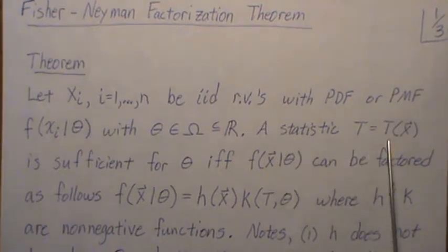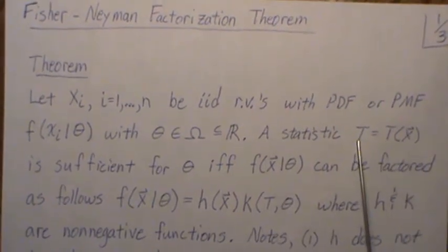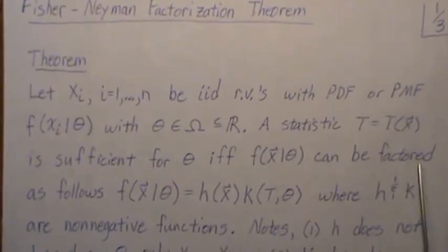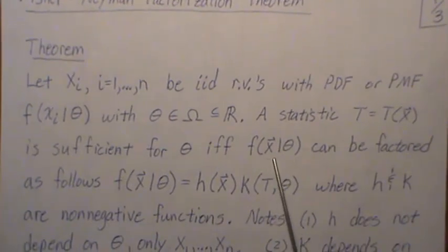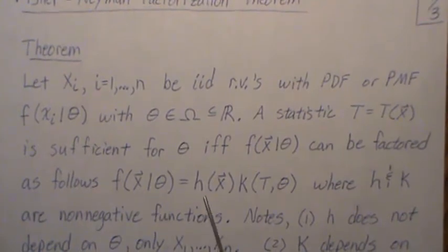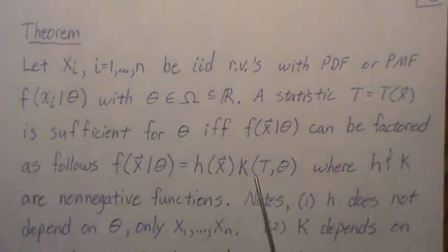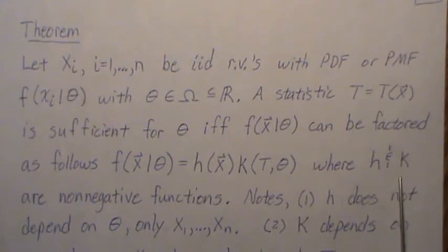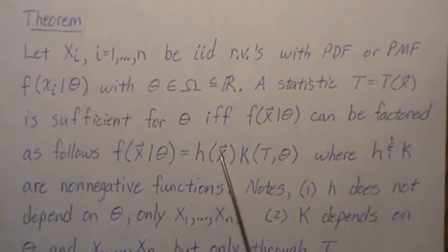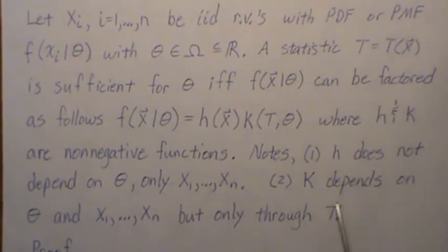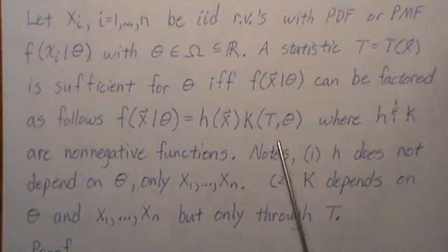A statistic — call it t, really a function of the data — is sufficient for theta if and only if the joint density or PMF can be factored into h and k, where both h and k are non-negative functions. Note that h is not a function of theta, only of the data. And k depends upon theta and the data, but only through the sufficient statistic t.